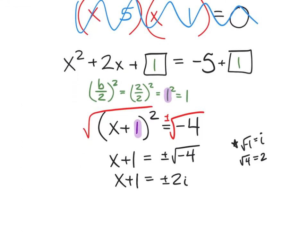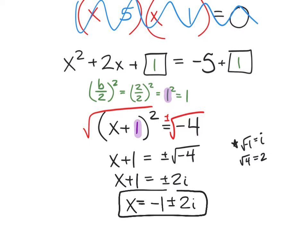We're so close to being done, but we still haven't isolated x yet. That part's easy — just subtract 1 from both sides, giving x = -1 ± 2i. You cannot combine real and imaginary parts, so that's our answer. And that's completing the square: set up the problem, do the b/2 squared step, then finish by square rooting.